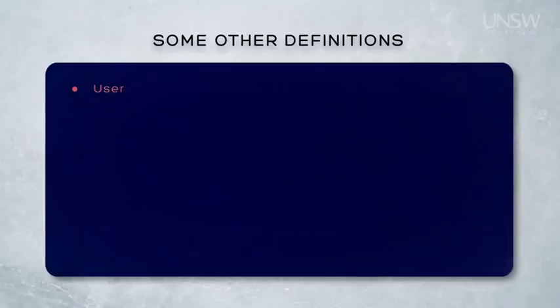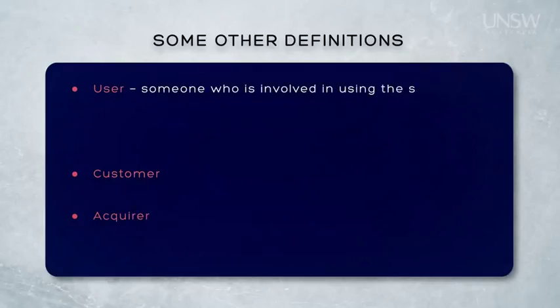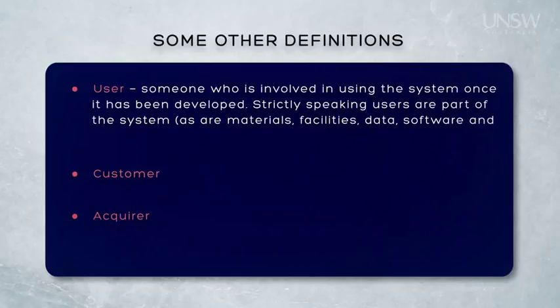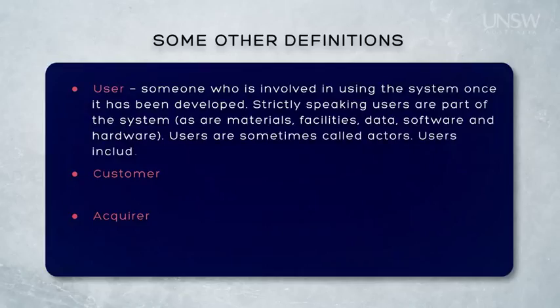While we're talking about definitions, let's look at some other major definitions, some of which we've seen before in earlier modules. A user is someone who's involved in using the system once it's been developed. Strictly speaking, users are part of the system — they're there as part of the other elements of a system, such as materials, facilities, data, software, hardware, and so on. And because they're part of the system, users are sometimes called actors — that is, they play a role as part of developing the functionality of the system. So users will include operators, maintainers, and so on.